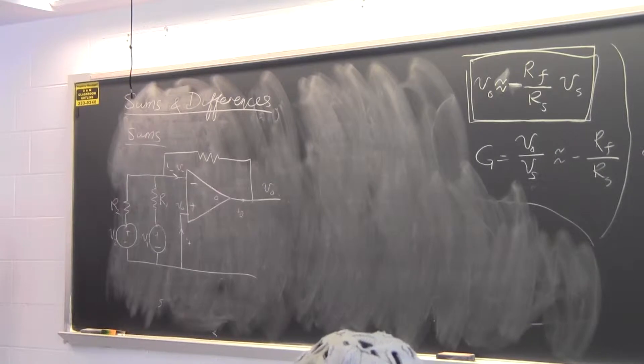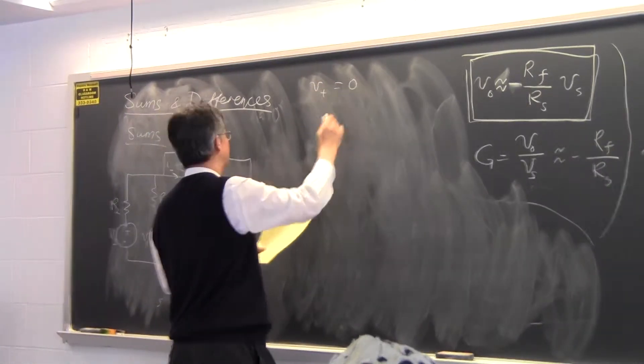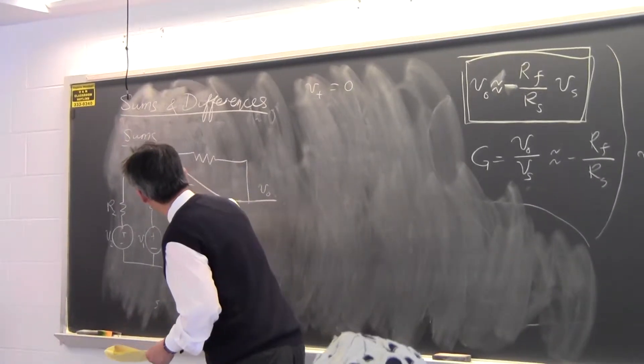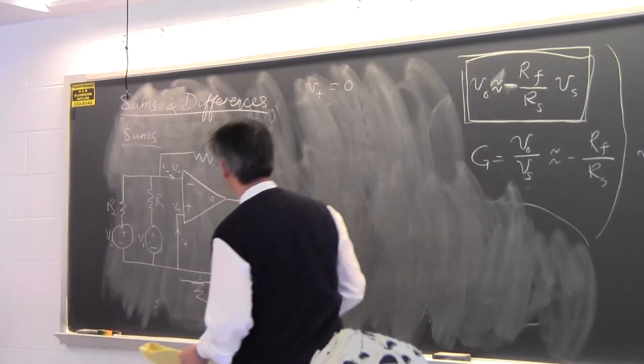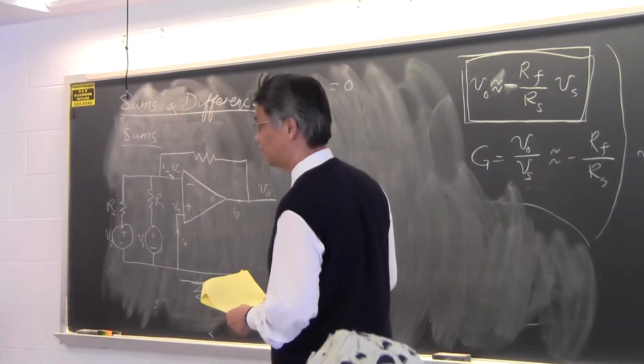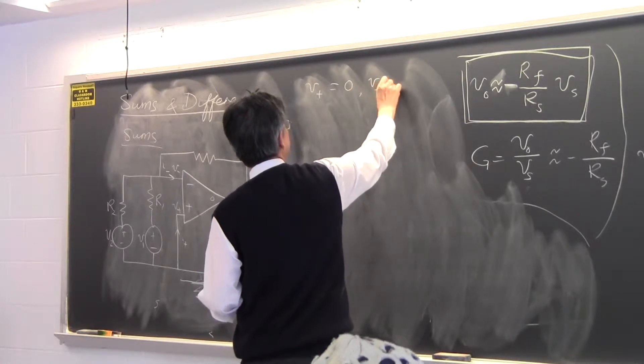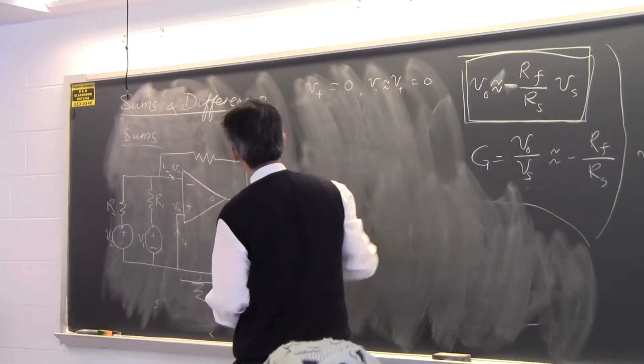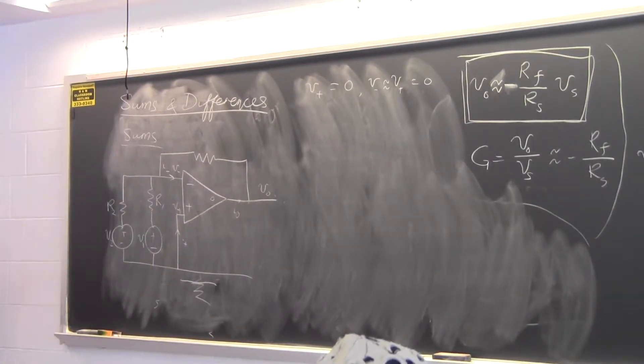We make OpAmp approximations and V+ is equal to zero because V+ is connected to the ground. Let me draw a ground here. And then I have V- is approximately equal to V+ equal to zero. So V- is also very close to being grounded.